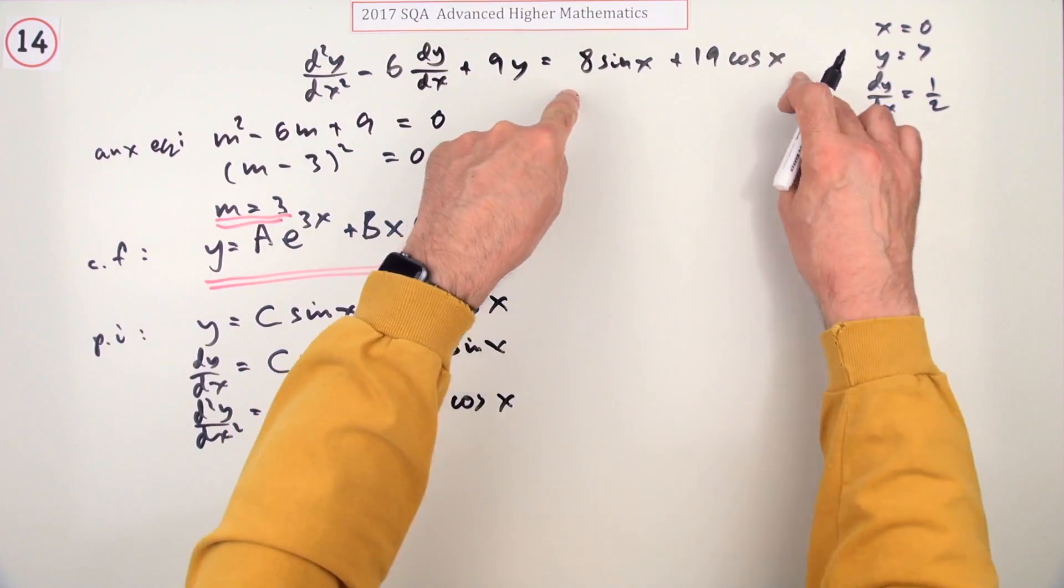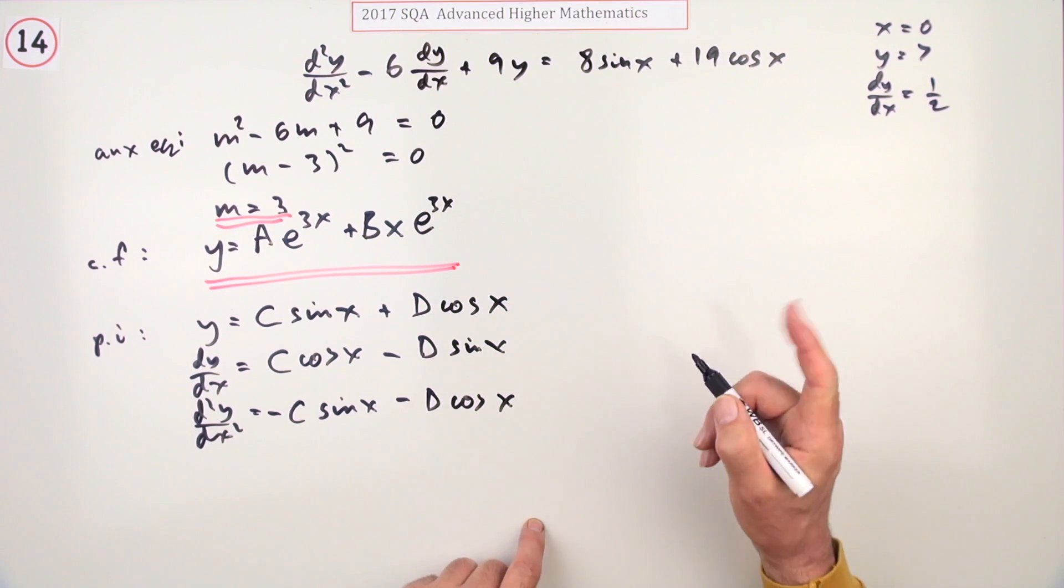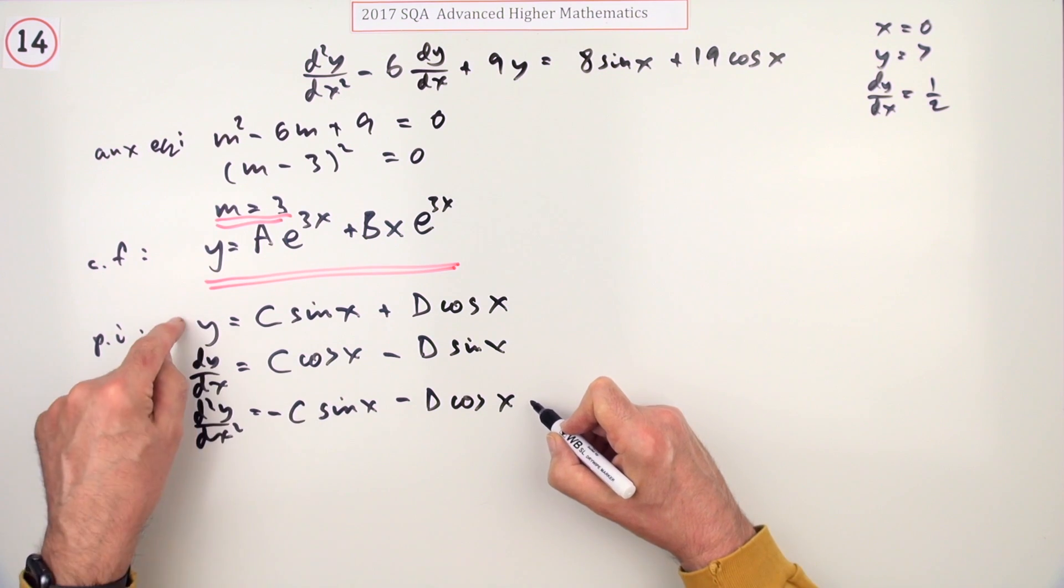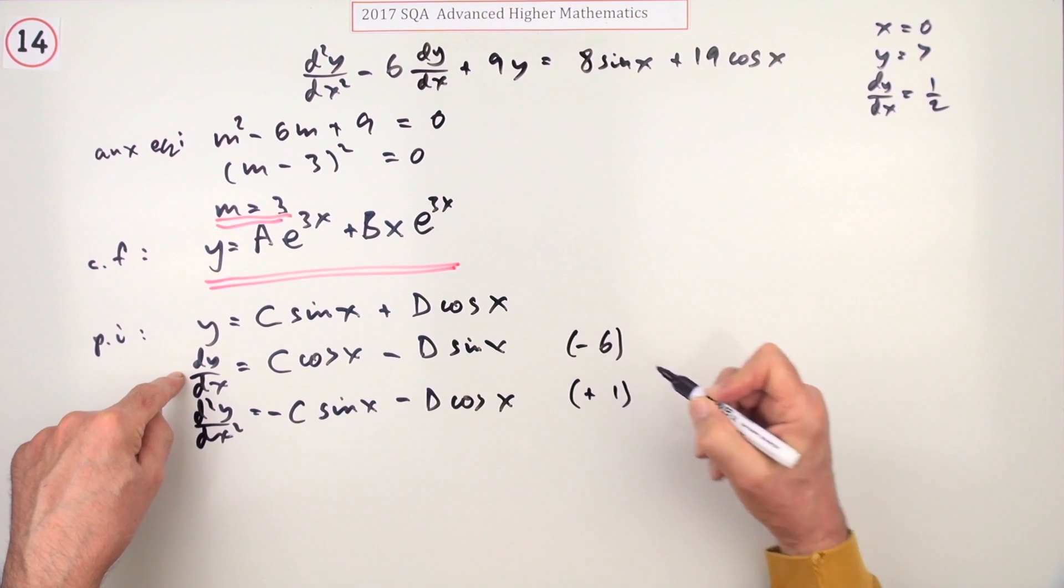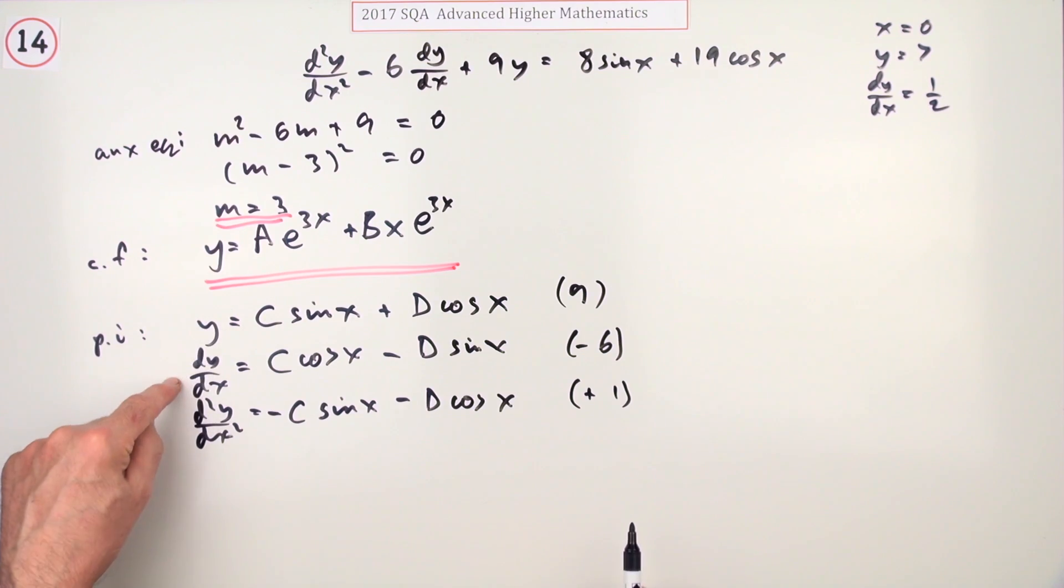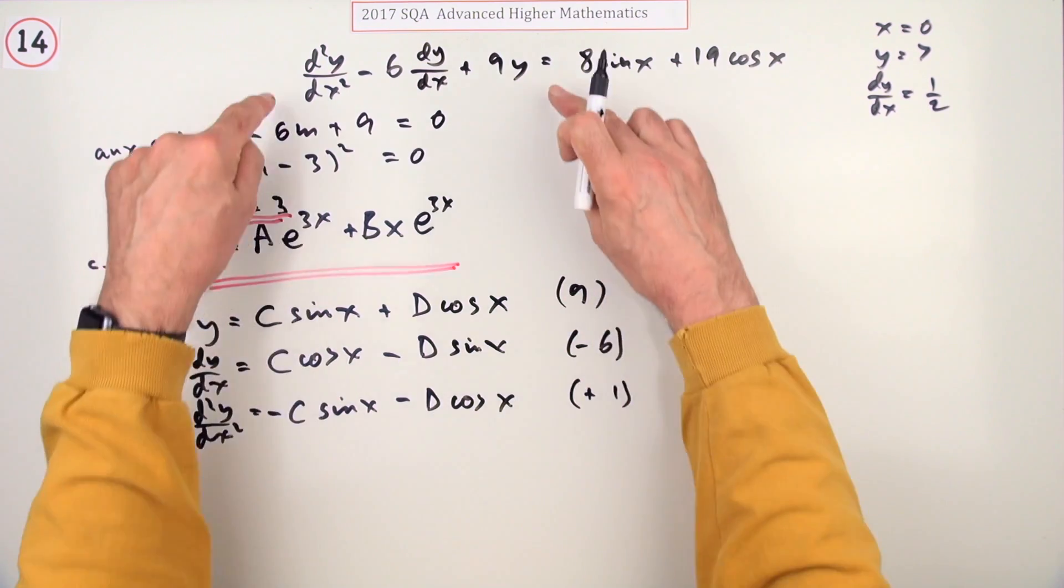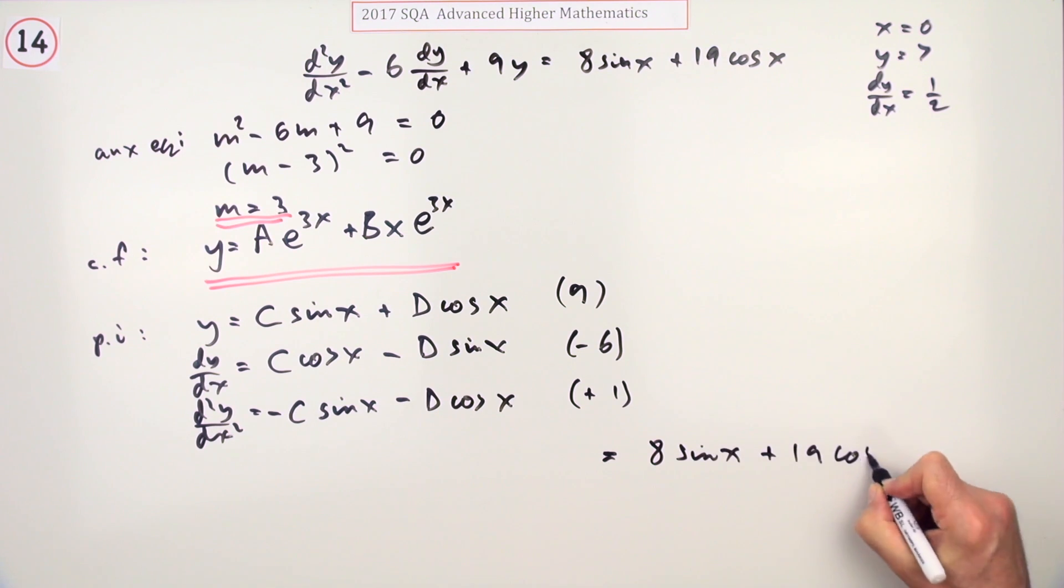You need to feed this back into the equation to equate it to the right side. I want one of the middle one, I want to take off six of those, and for the first one I want nine of those. That will make this and that should equal this.